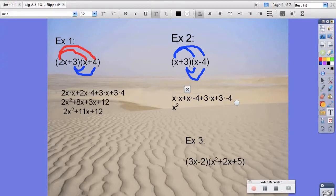plus negative 4x, plus 3x, plus negative 12, which gives us x squared, minus x, minus 12.